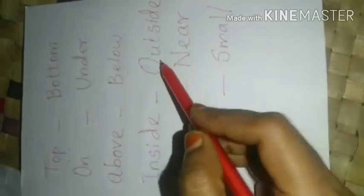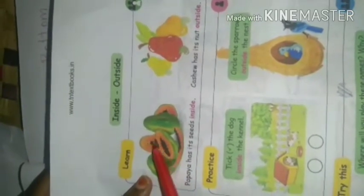Now inside and outside. See this picture — in the papaya, the seeds are inside. The papaya seeds are inside. See this cashew — the nut is outside. Everyone knows papaya and cashew. Always papaya seeds are inside the papaya; in the cashew, the nut is outside.